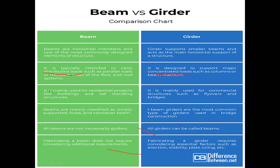Girders carry concentrated loads while beams carry UDL loads. In terms of application, beams are majorly used for residential projects like buildings and tall structures, while girders are mainly used for commercial structures such as flyovers and bridges where loads are heavy and members need greater depth. Greater depth gives the beam maximum bending strength. Beams are classified as simply supported, fixed, or cantilever beams, while I-beam girders are the most common type used in bridge construction.